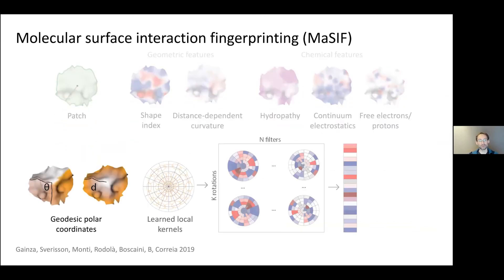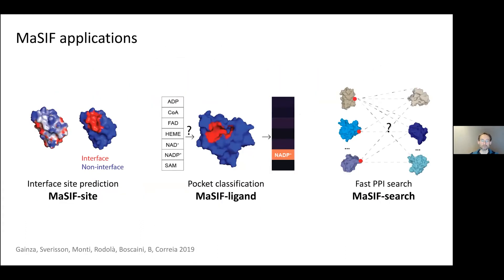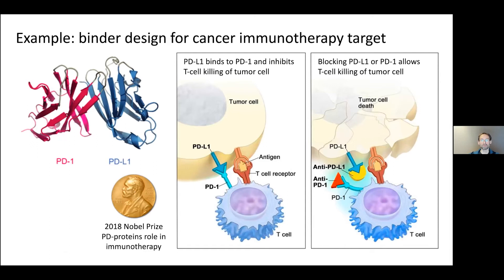We use this coordinate system for convolutional filters and concatenate multiple such layers, as in standard CNNs, except convolution operates on the surface itself — making it geometric. We then plug in task-specific layers depending on the problem. We consider three types of problems: predicting interaction sites, predicting the ligand (given a known pocket that binds a small molecule), and using the same architecture trained differently for fast protein-to-protein interaction search.